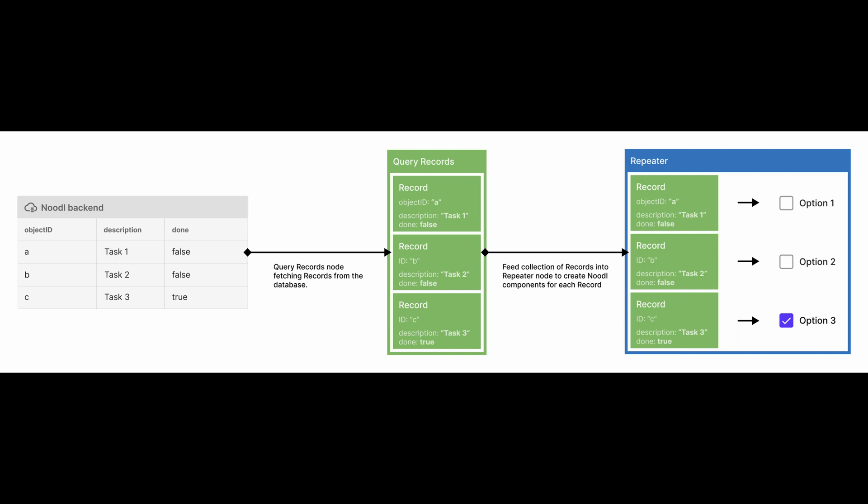Now that our query records node contains a collection of records, we often want to display them in our UI, and this is where we will use the repeater node. We give the collection of records from the query records node to the repeater node, and it will go through each record and generate a specific component for each one. We tell the repeater node which component it should use — in our case it will be the task item — and the repeater node can supply each task item with the ID of a specific record.